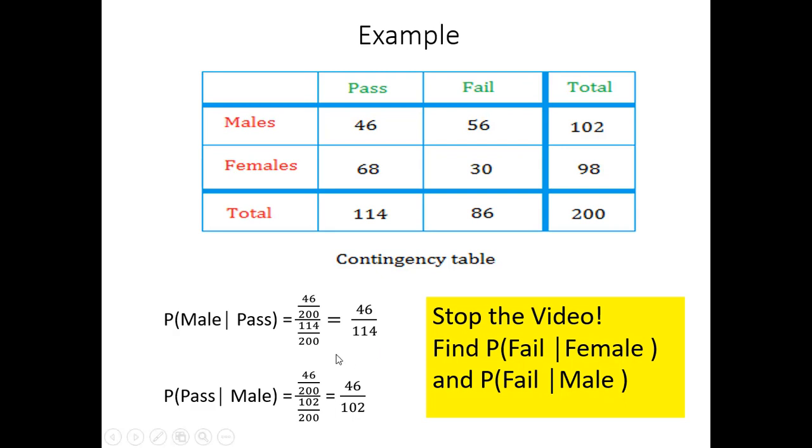But notice this is different from the probability that a person passes given that they're male. Now in this second case, the sample space is restricted to males, so we can think of this row. We find this conditional probability by looking at the intersection of passing and male, same number that we got in the first example. We get 46 over 200. But now our denominator is different, it's 102 over 200. So we can simplify the fraction and we get 46 over 102. So at this point, let me ask you to stop the video. Try to find the probability that a person fails given they're female, and the probability that a person fails given that they are male.